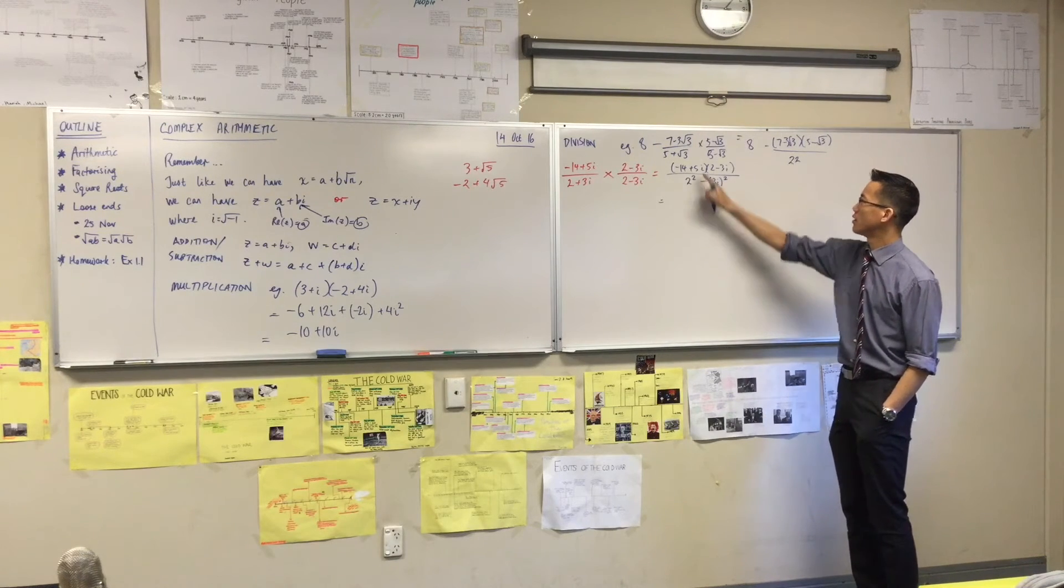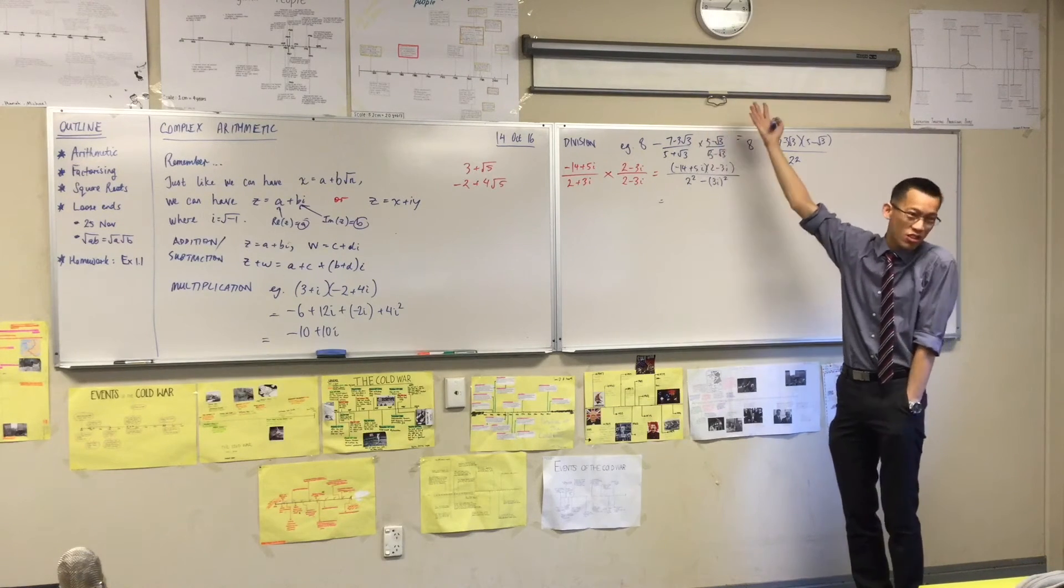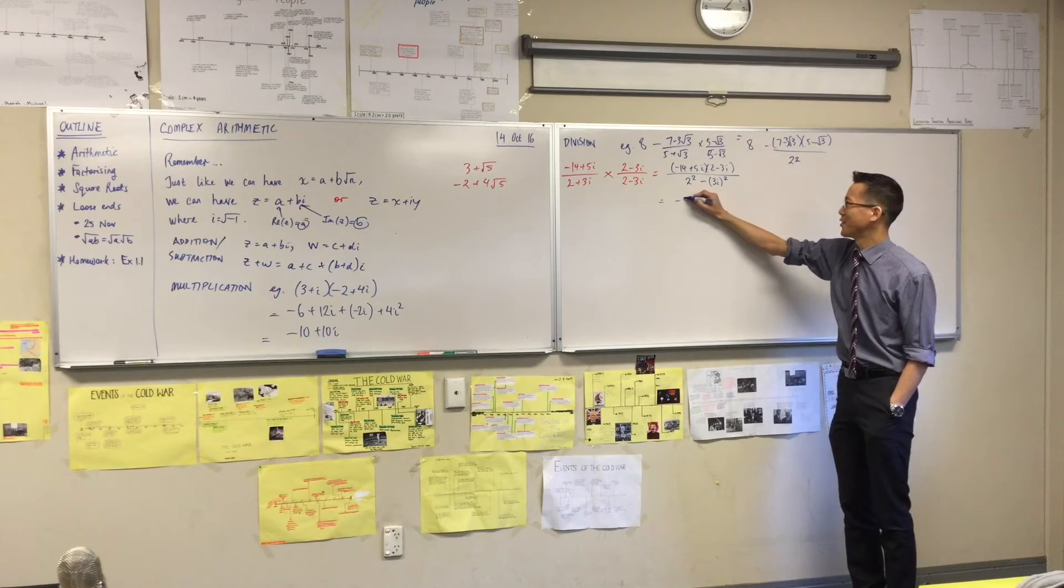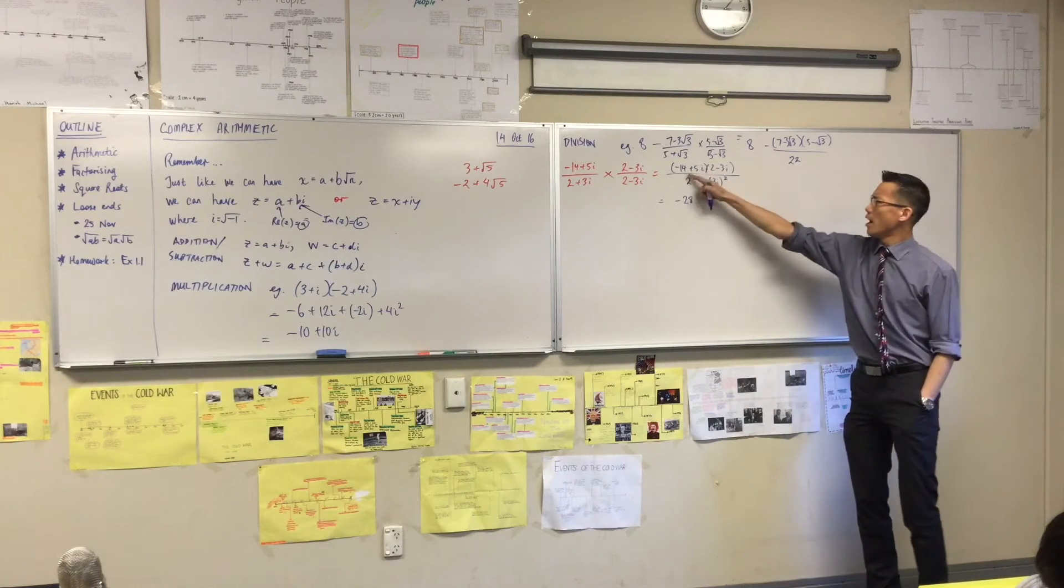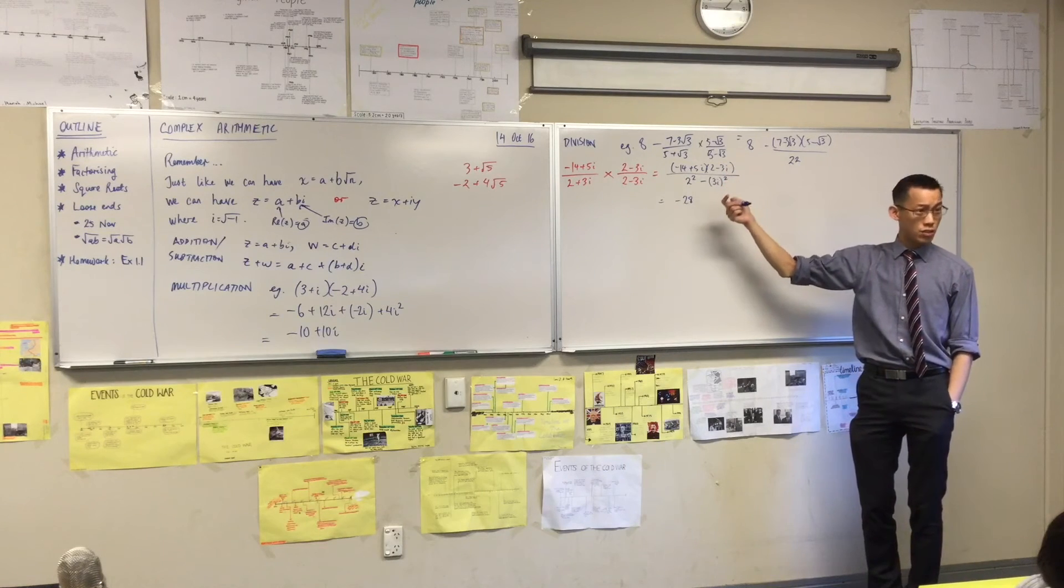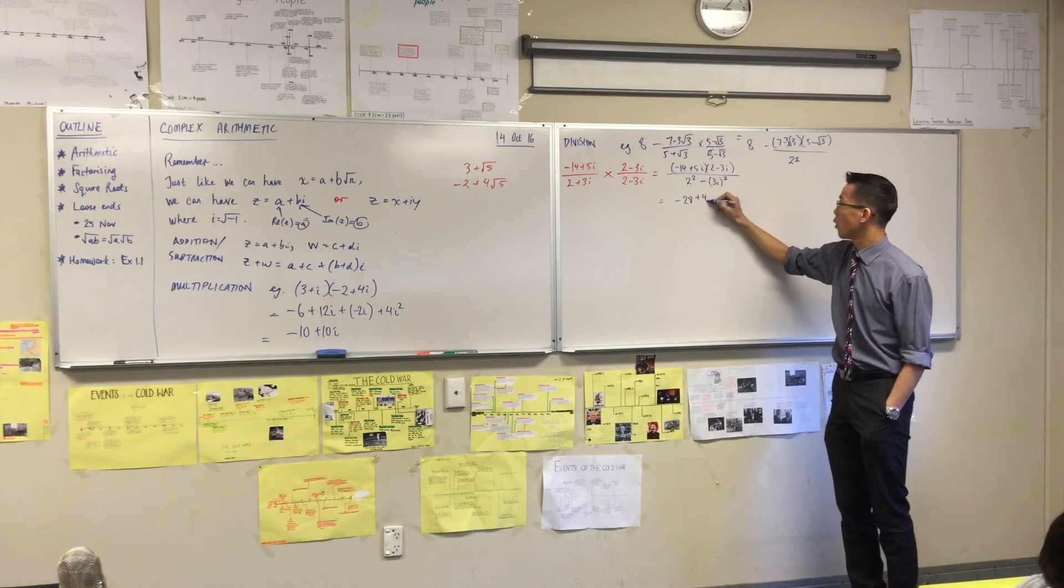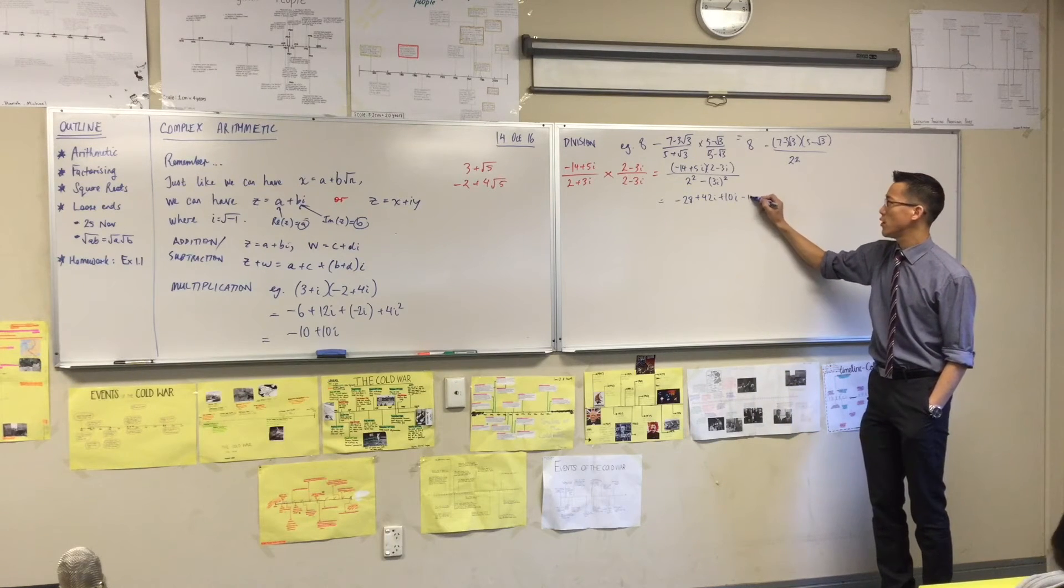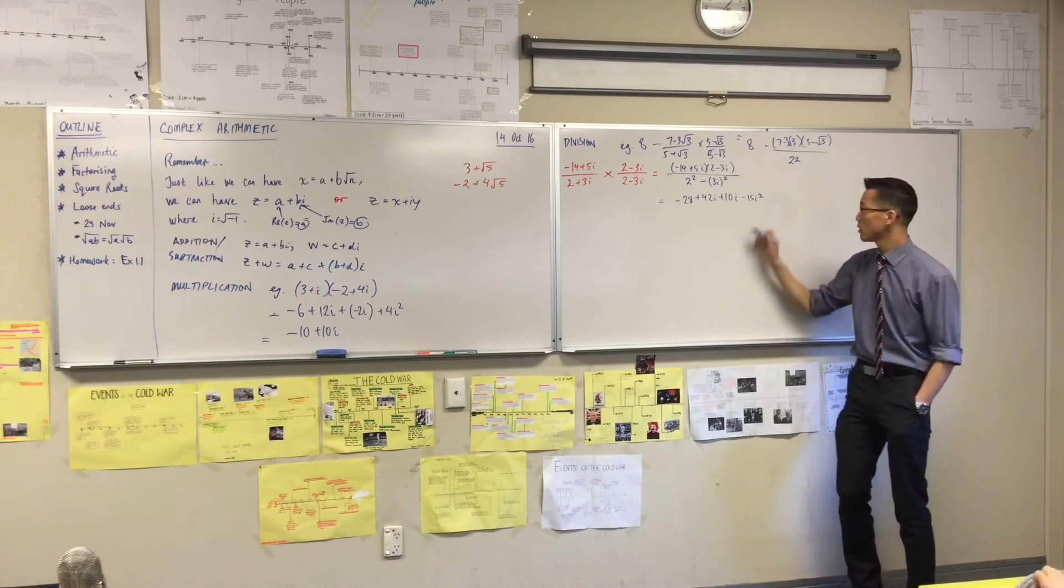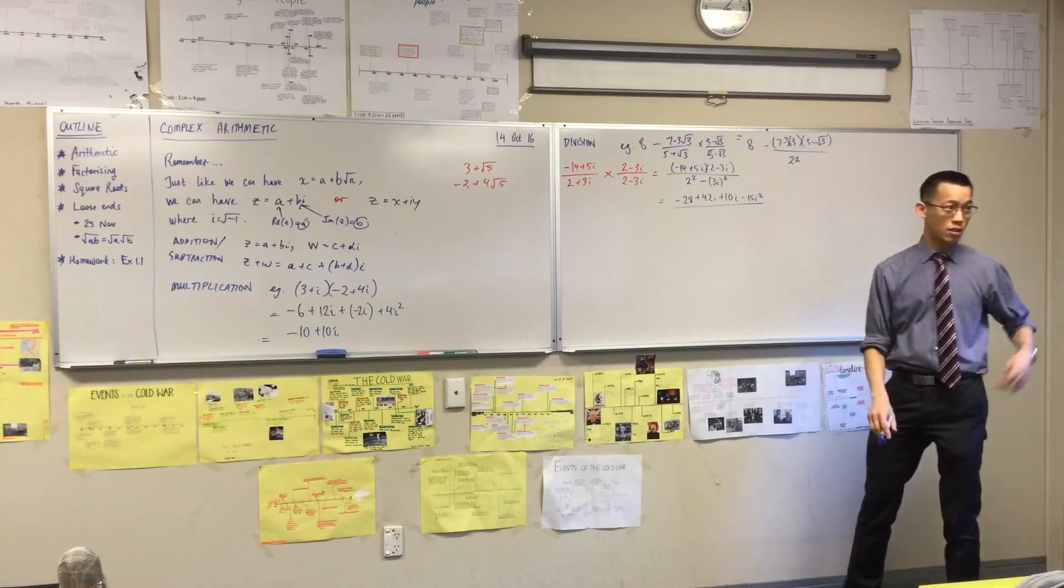Hold on, you do it. I'm going to do the numerator first. Let's do the numerator. It's okay. I forgive you. I'm gracious and merciful like that. I'm going to get -28, 14 by 3 is 42, +42i, watch your signs, +10i - 15i². Happy? Yeah? Looks good.